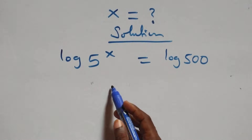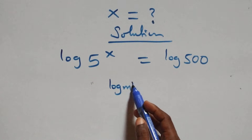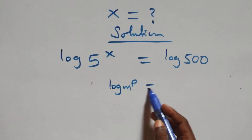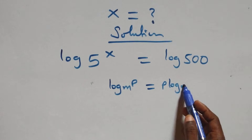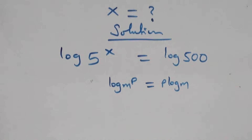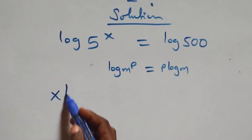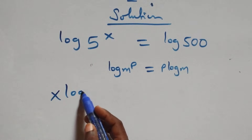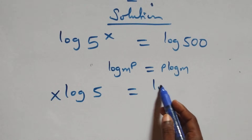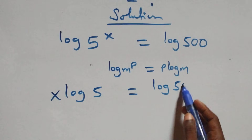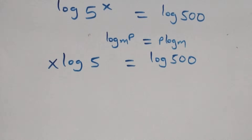We apply the power rule of logarithms. We have log m raised to power p, which is the same as p log m. So all we have here becomes x log 5 equals to log 500.